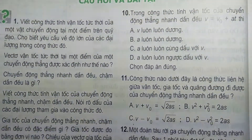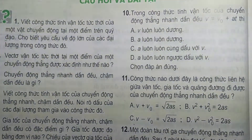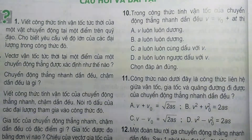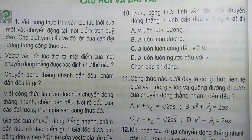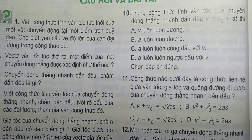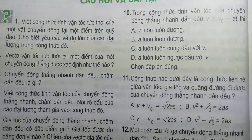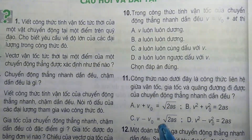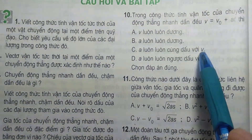Câu số 10: Trong công thức tính vận tốc của chuyển động thẳng nhanh dần điều V bằng V0 cộng A nhân T thì: A — V luôn luôn dương; B — A luôn luôn dương; C — A luôn luôn cùng dấu với V; D — A luôn luôn ngược dấu với V. Nhanh dần điều thì A nhân V ra số dương, có nghĩa là A luôn luôn cùng dấu với V. Câu 10 chúng ta chọn C.